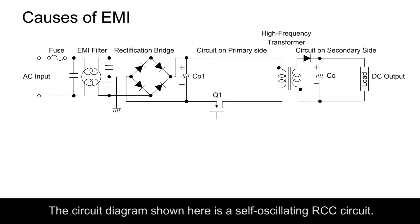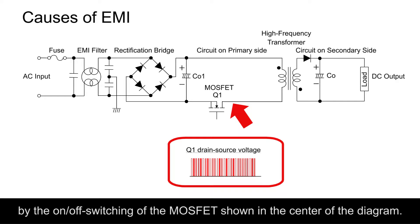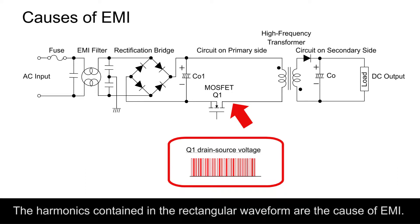The circuit diagram shown here is a self-oscillating RCC circuit. The received AC voltage at commercial frequency is converted into a high-frequency rectangular waveform of several dozen kHz by the on-off switching of the MOSFET shown in the center of the diagram. The harmonics contained in the rectangular waveform are the cause of EMI.